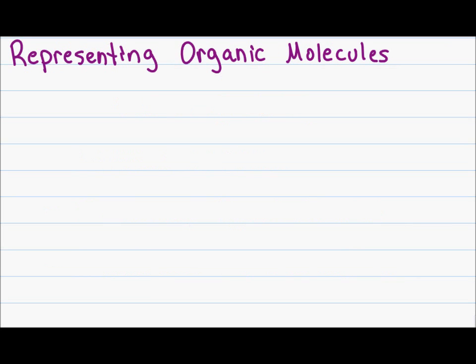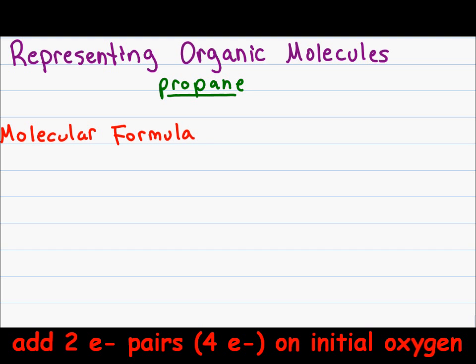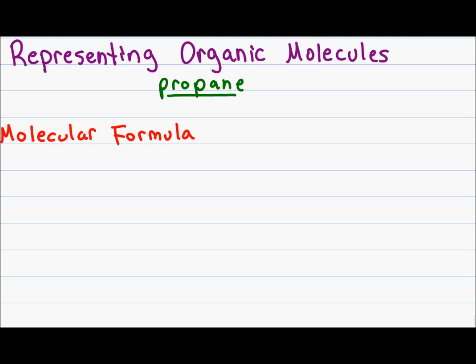There are a number of different ways to represent organic molecules. I will use propane as an example to show you each of these methods. A molecular formula simply tells you what atoms are in this molecule and how many atoms of each. A molecule like propane will have 3 carbons and 8 hydrogens written as C3H8.